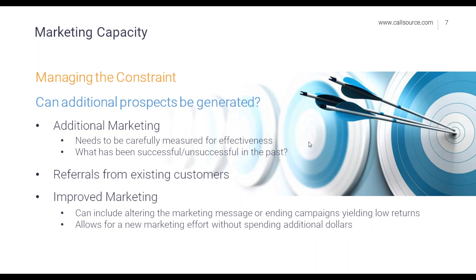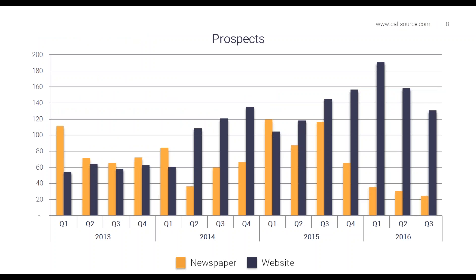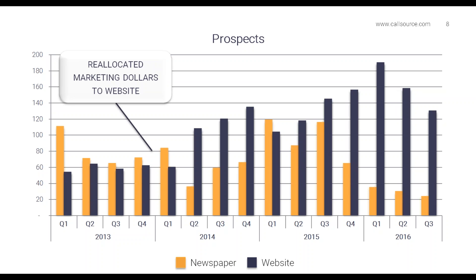Thank you Thomas. I'd like to share a success story with a client where they identified and managed a capacity constraint using CallSource data. Their team was performing at a high level with very high conversion rates, yet they still were not reaching their overall business goals. We looked at their data and identified it was their marketing acting as the constraint — they were just not generating enough leads to meet their business objectives. The question was: can additional prospects be generated? By supplying marketing transparency, the CallSource reports helped ensure they weren't spending marketing dollars on advertising that was not performing for them.